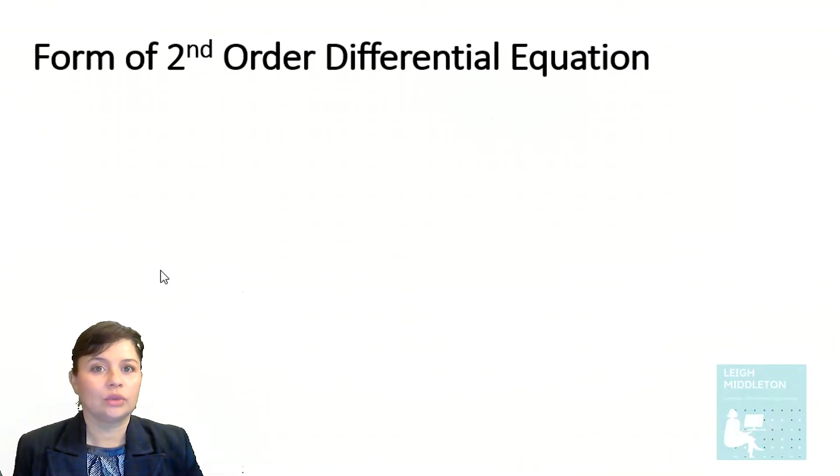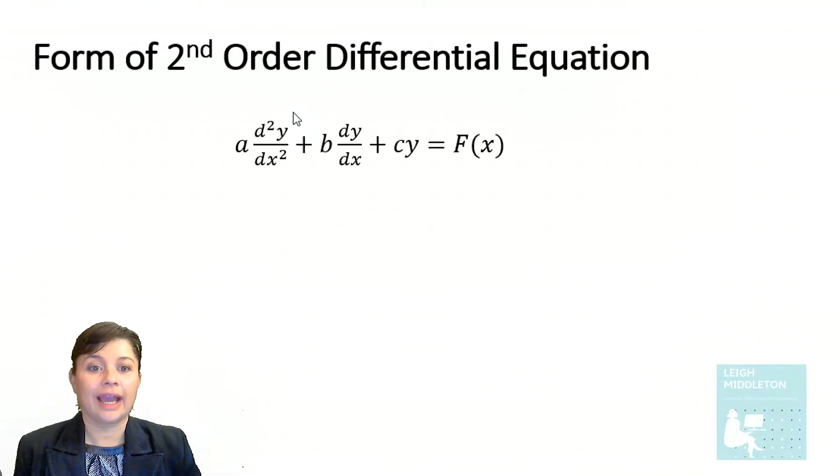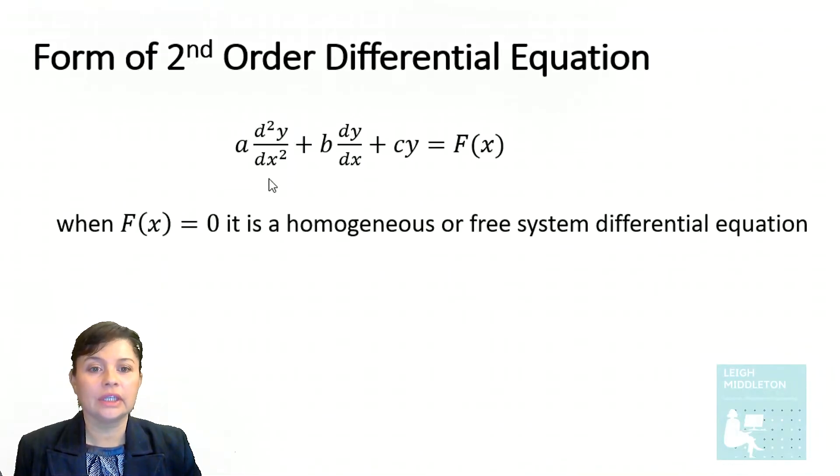The form of a second-order differential equation is where you have the highest derivative in the equation being the second derivative. When your function F(x), which is here on the right-hand side, is equal to 0, it is a homogeneous or free system differential equation.